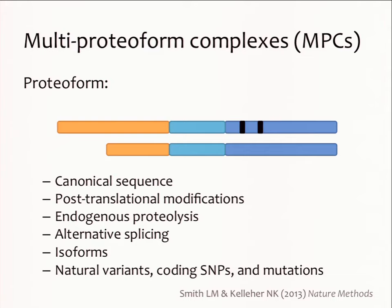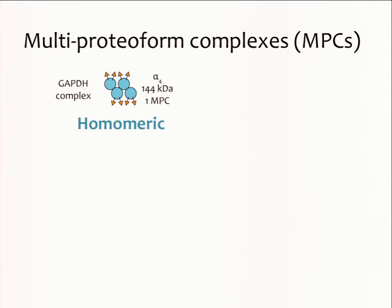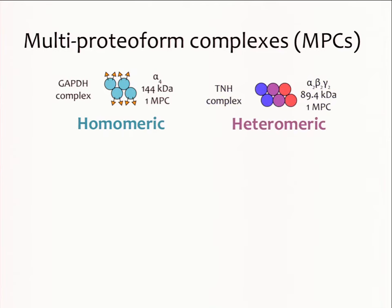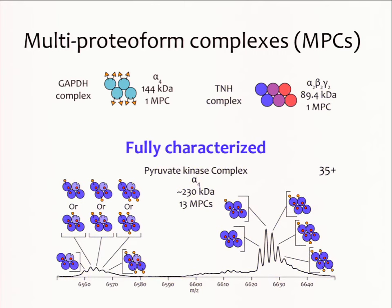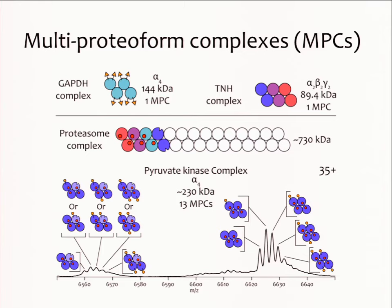A multiproteiform complex is, quite simply put, a complex composed of multiple proteiforms. It can be homo- or hetero-meric in nature, and using the approach that we've developed, we can fully characterize a whole set of related multiproteiform complexes, or we can use just a handful of proteiforms to partially characterize a multiproteiform complex. Because this is all top-down, we can have proteiform resolution, which includes things like post-translational modifications.